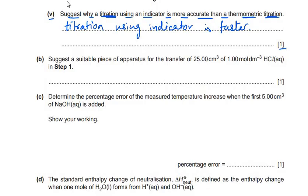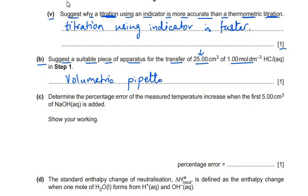The next sub-question asks: suggest a suitable piece of apparatus for the transfer of exactly 25 cm³ of 1 mol/dm³ HCl. If we are transferring exactly 25 cm³, we should use a volumetric pipette, since pipettes and burettes are the apparatus that give accurate volumes, and for a single fixed-volume transfer the pipette is most appropriate.